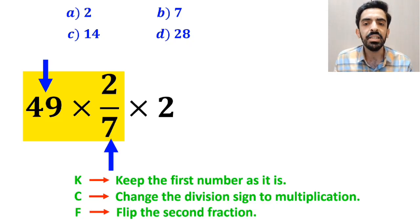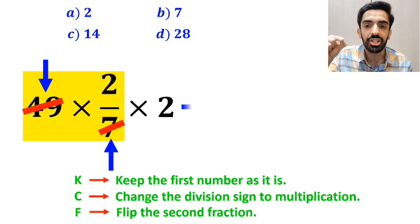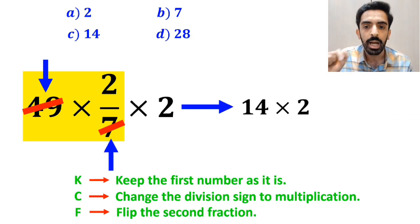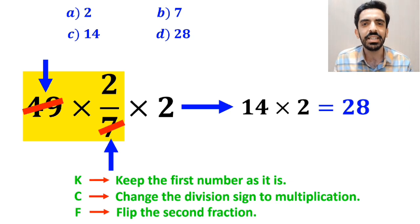Now, we can easily simplify the number 49 with the 7 in the denominator, and instead of this expression, we can write 14 multiplied by 2, which finally gives us the answer 28.